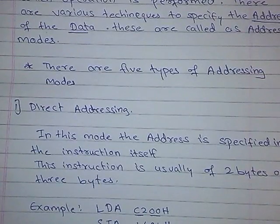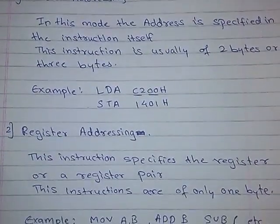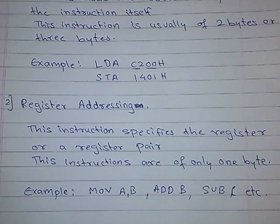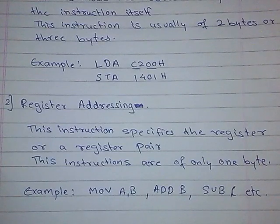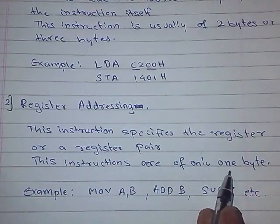The next addressing mode is register addressing mode. In register addressing mode, there is use of registers only. Whenever you see any instruction in which specifically only registers are used — for example, register A, B, C, D, H, or L — HL is also a register pair and can be used as such. Whenever all these are used, you can say that it is a register addressing mode. These instructions are only of 1 byte, because there is no memory location — it is only an instruction, so this is only 1 byte.